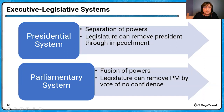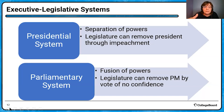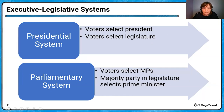Think about policymaking: which system makes it easier to get things done? When you're the prime minister, you propose a bill and the majority party passes it — because if they can't maintain the confidence of the House, the PM could be removed through a vote of no confidence. In a presidential system, the president proposes a law, the legislature can pass it, and the president can veto it. The legislature can then override that veto. Both systems protect accountability to voters and constrain the executive, just structured very differently.